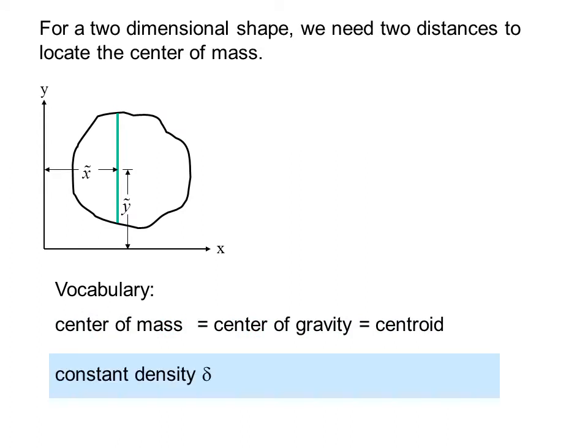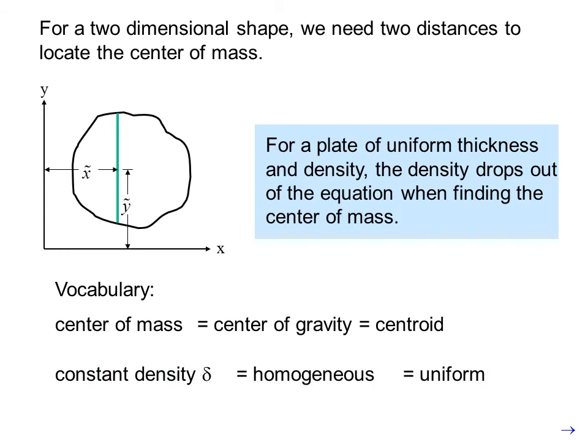Constant density delta is also referred to as homogeneous or uniform. For a plate of uniform thickness and density, the density drops out of the equation when finding the center of mass.